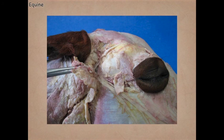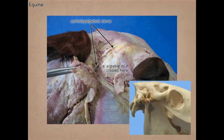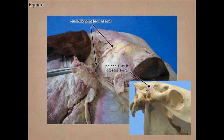Coming back up to the temporal region, we see the auriculopalpebral nerve coming off the facial nerve and crossing over the zygomatic arch — it is palpable here on the live animal. Is this motor or sensory? Remember the facial nerve allows you to make faces, so it's motor. This portion is motor to the orbicularis oculi and the levator nasal labialis, and is the nerve that needs to be anesthetized for eye surgery to stop the animal from blinking.